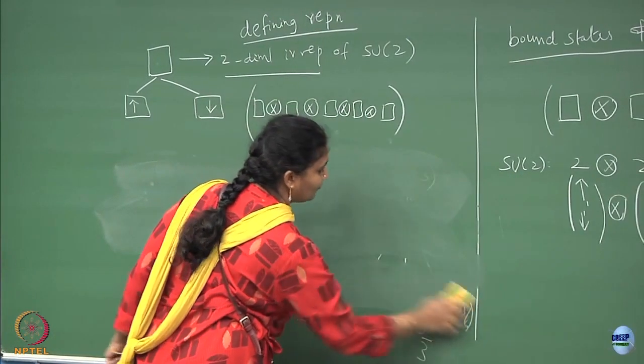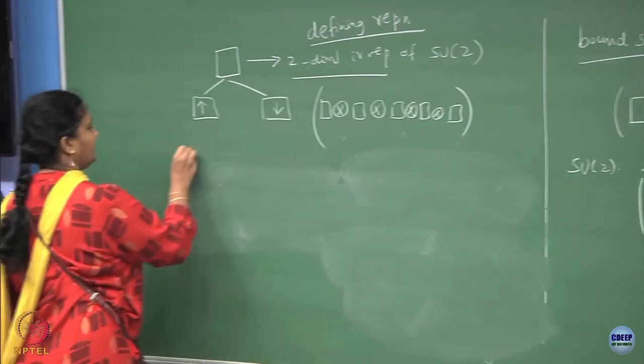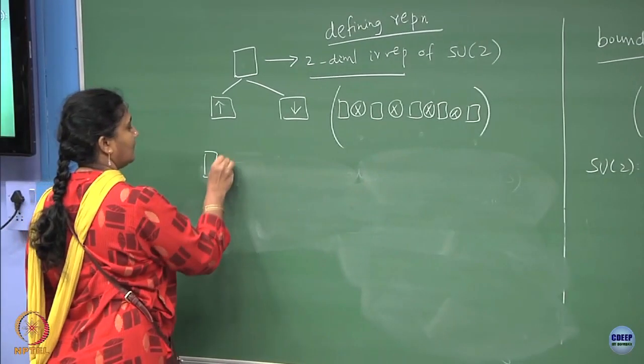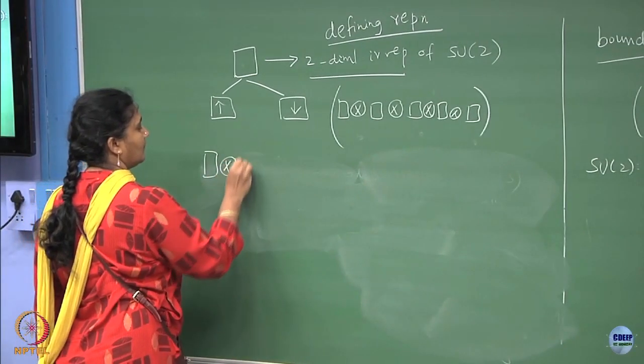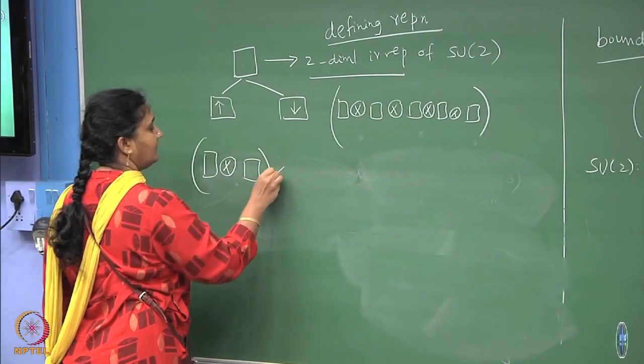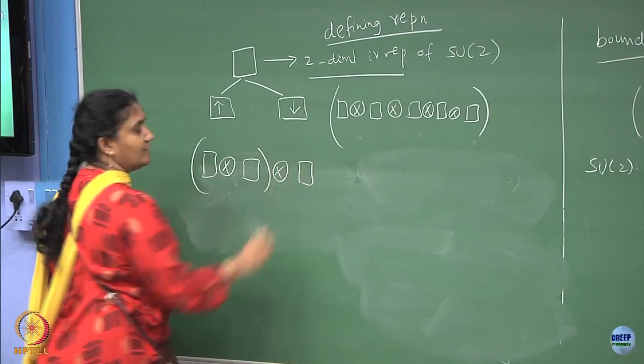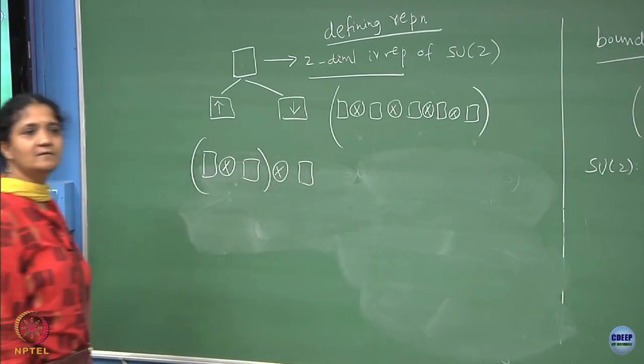Now I am doing SU(2). I take this combination - this we did anyway, it is anyway associative so it does not really matter.